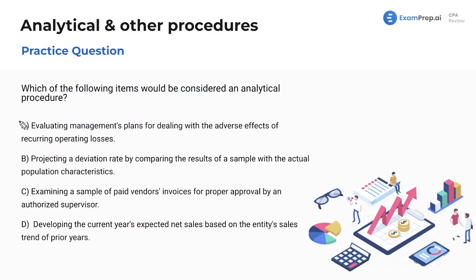I want to eliminate letter A. This is something you, like, these are all items you could do. Like, there's no reason you wouldn't do any of these. It's just this is not an analytical procedure. Projecting a deviation rate by comparing. Okay. So this is sampling. That's not an analytical procedure. It's already talking about sampling that's involved in sampling procedures, but not here.